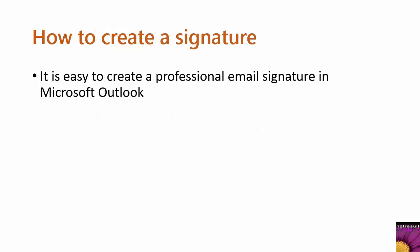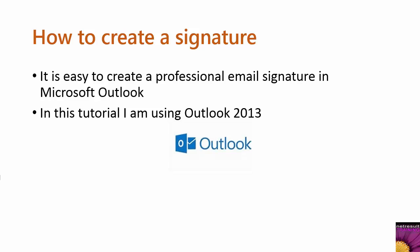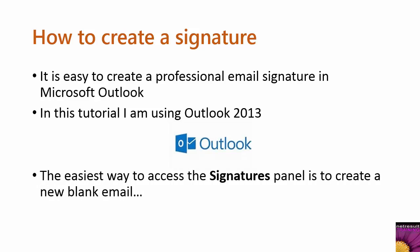It's very easy to create a professional looking email signature in Microsoft Outlook, and for this tutorial I'm using Outlook 2013. The first thing to do is to access the signatures panel, and you can do that in several ways.